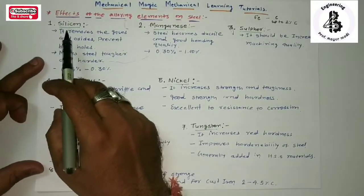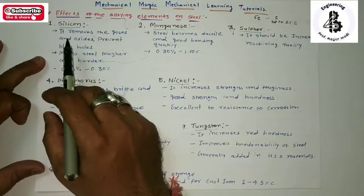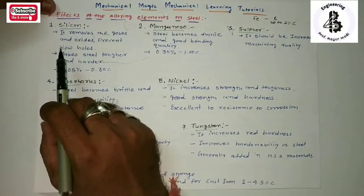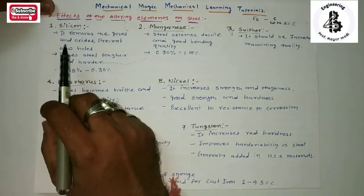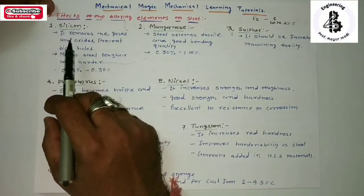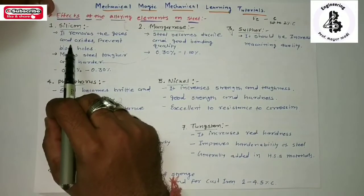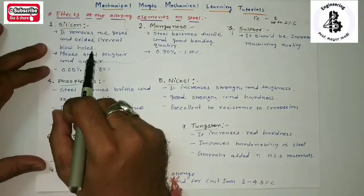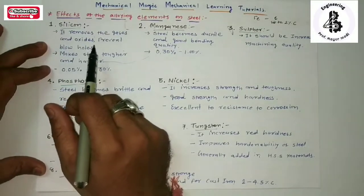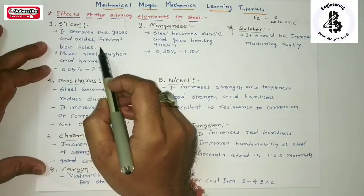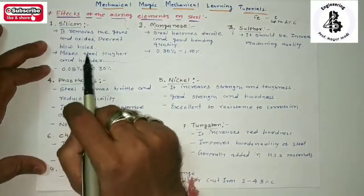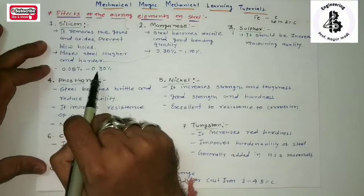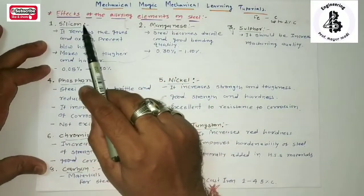Starting with the first one: silicon. Silicon generally removes gases and oxides and prevents blow holes. In the case of castings, or the foundry process for manufacturing from raw material to finished products, silicon has an important role in removing hot gases and oxides which develop during the manufacturing or hot working process. By the addition of silicon, blow holes — which are considered defects — are prevented and reduced. Silicon also makes the material tougher and harder. The maximum solubility of silicon is 0.05% to 0.30%.